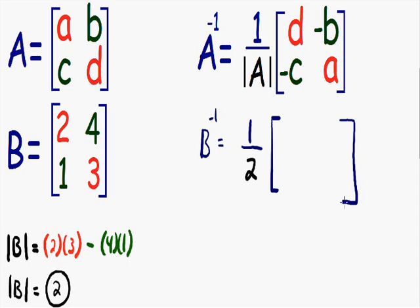First let's take a look at the red diagonal — we need to switch the positions of those numbers. In the original matrix B, the red diagonal has a 2 and a 3. The 2 is in the top left corner, so in the inverse it's going to be in the bottom right corner. The 3 is in the bottom right corner of the original matrix B, so in the inverse it's going to be in the top left corner. Now for the green diagonal — we have a 1 and a 4. They stay in the same position, but since they're both positive in the original matrix, they're both going to be negative in the inverse matrix.